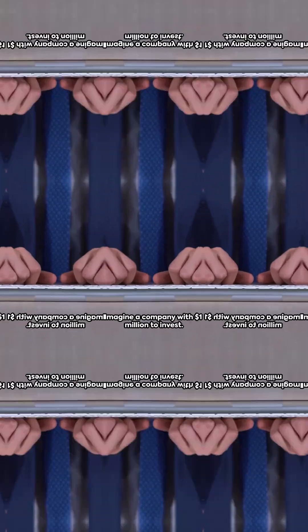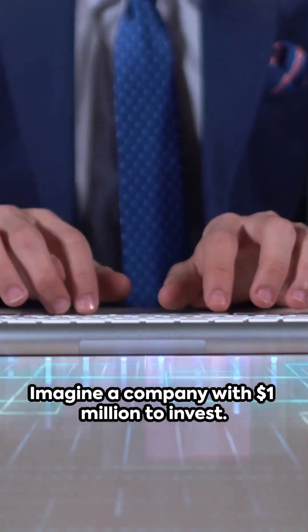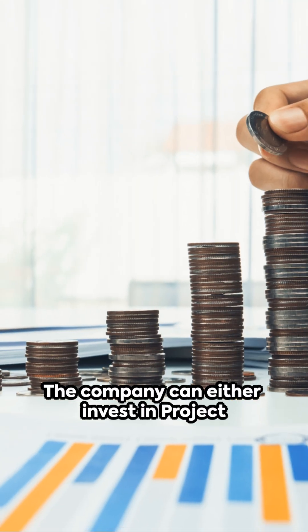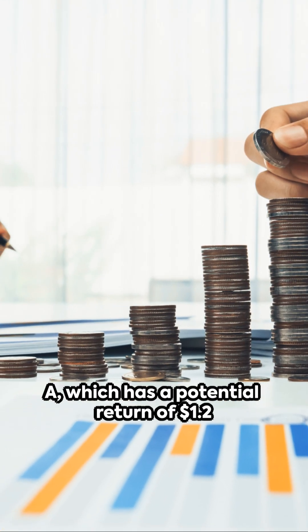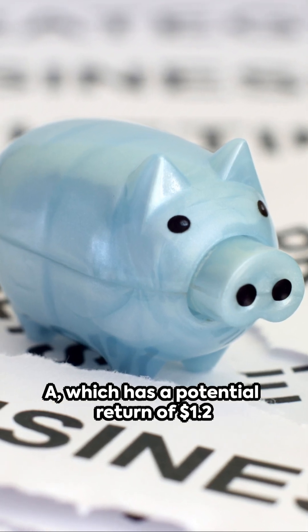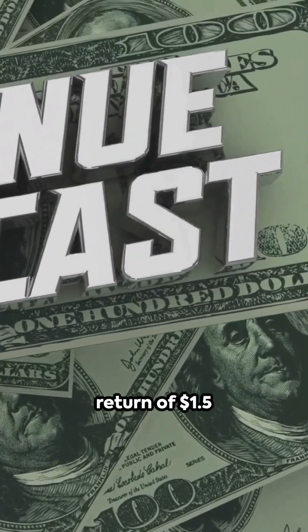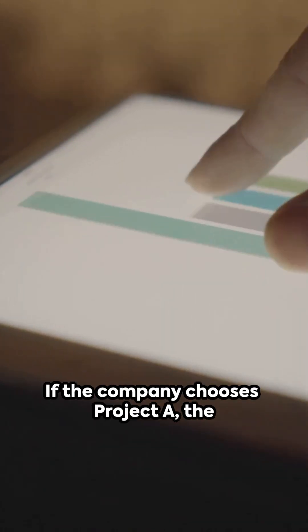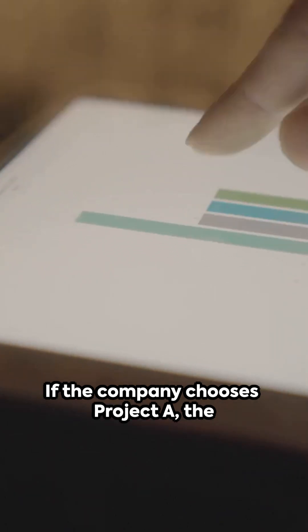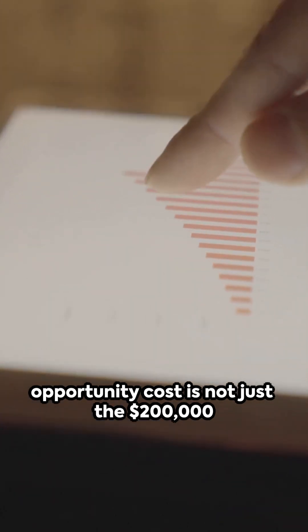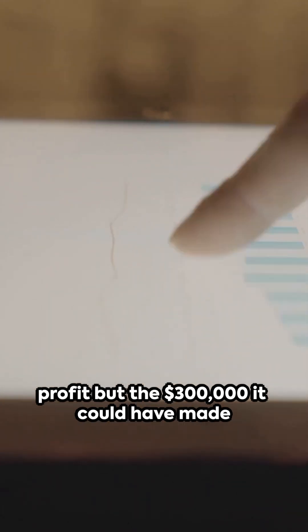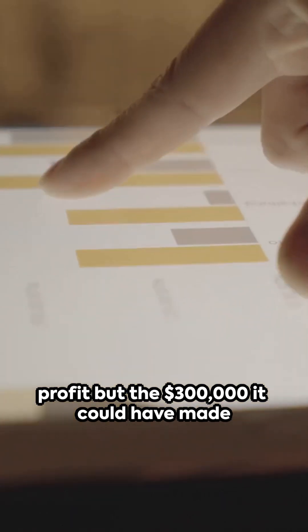Imagine a company with $1 million to invest. The company can either invest in Project A, which has a potential return of $1.2 million, or Project B, with a potential return of $1.5 million. If the company chooses Project A, the opportunity cost is not just the $200,000 profit, but the $300,000 it could have made from Project B.